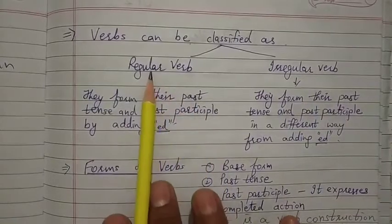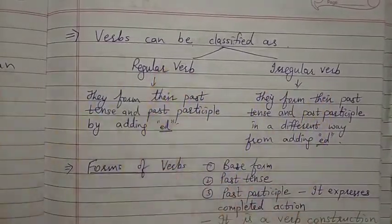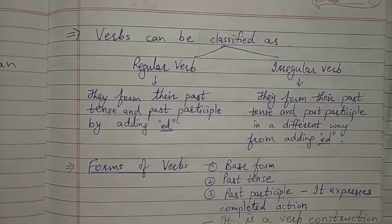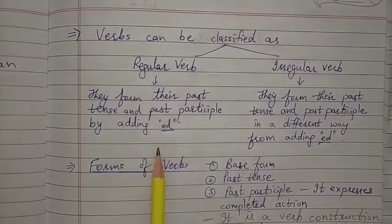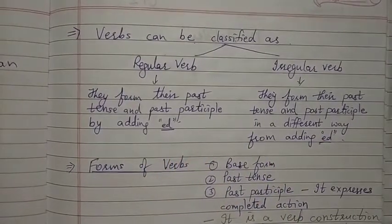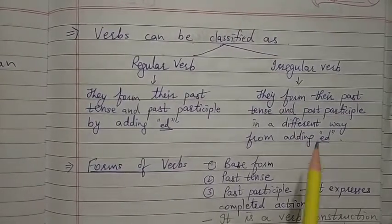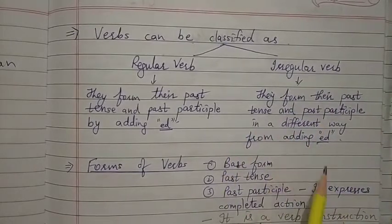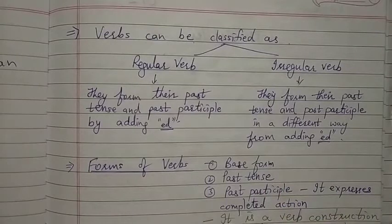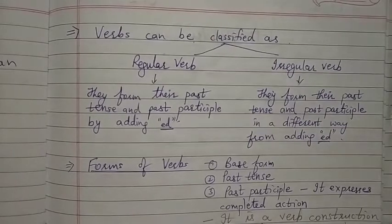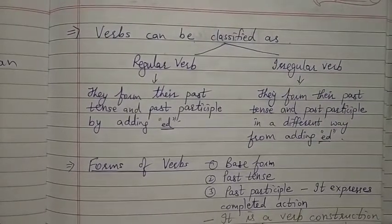Verbs can be classified as regular verbs and irregular verbs. Regular verbs form their past tense and past participle by adding 'ed'. Irregular verbs form their past tense and past participle in a different way — without adding 'ed'. For example: eat → ate, spell → spelt, teach → taught.